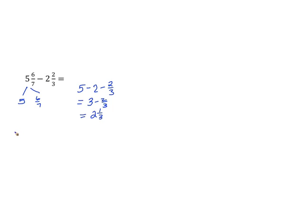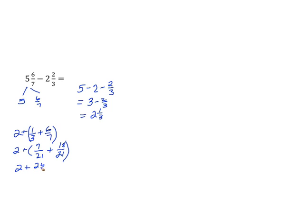Now we'll take that two and one-third, which is what's left of the whole, and decompose it to two plus one-third. Then we're going to bring back our fractional part and add six-sevenths. Our common unit is twenty-one. One-third is seven-twenty-firsts and six-sevenths is eighteen-twenty-firsts. We find the sum and get twenty-five twenty-firsts, which decomposes to two plus twenty-one-twenty-firsts plus four-twenty-firsts, giving us three and four-twenty-firsts.